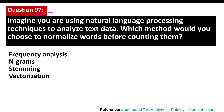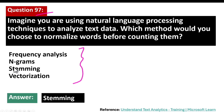Question number 97. Imagine you are using natural language processing techniques to analyze text data. Which method would you choose to normalize words before counting them? The correct answer is stemming. Stemming is a natural language processing technique that reduces words to their root or base form.